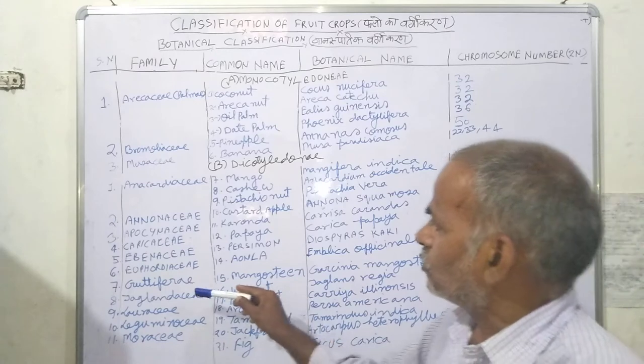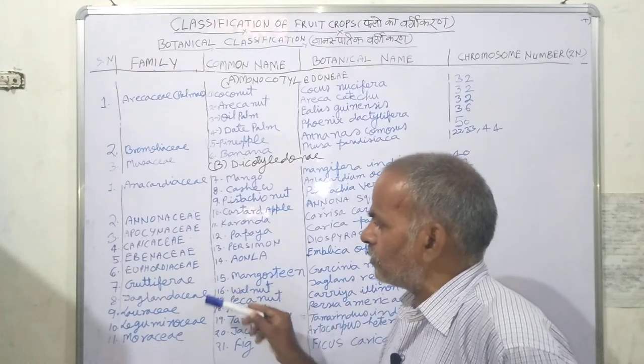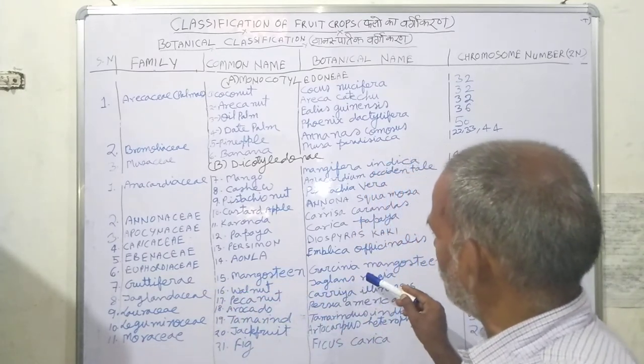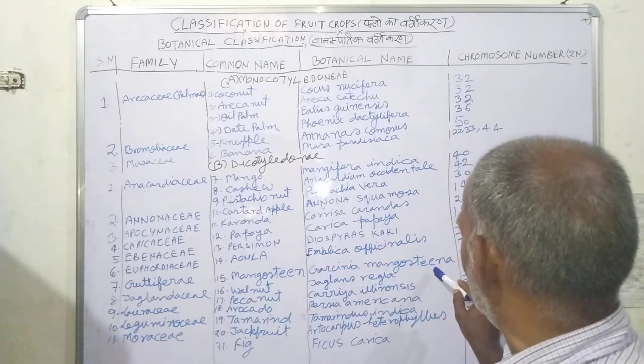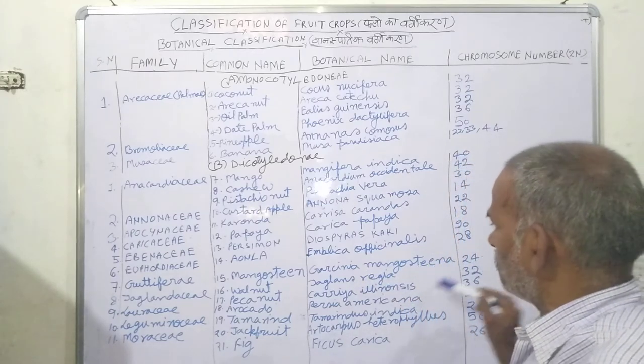Mangosteen belongs to the Clusiaceae family, and its botanical name is Garcinia mangostana. The chromosome number is 24.